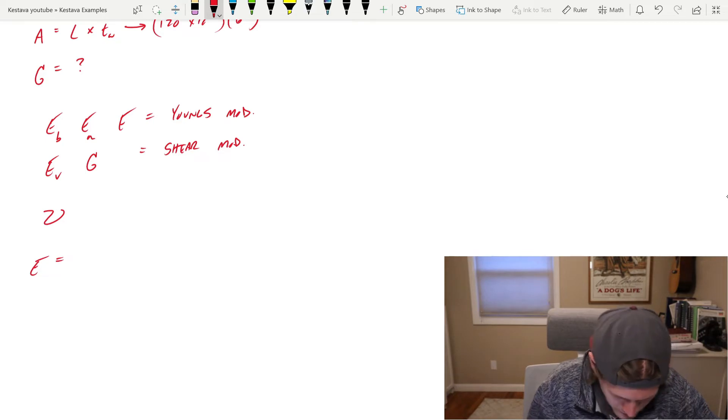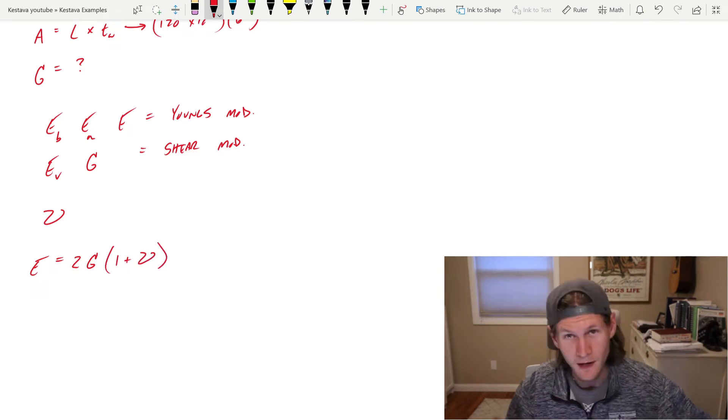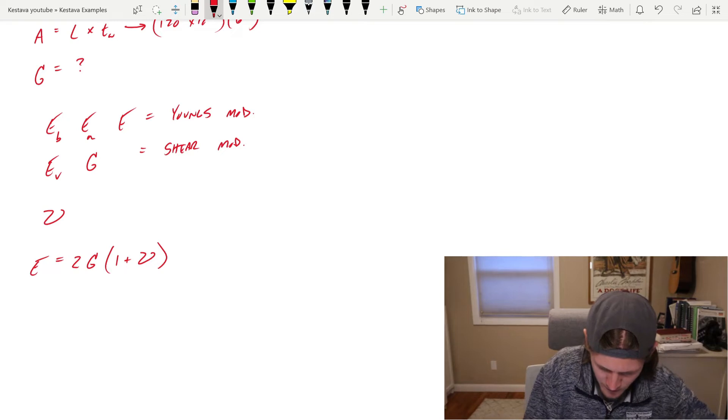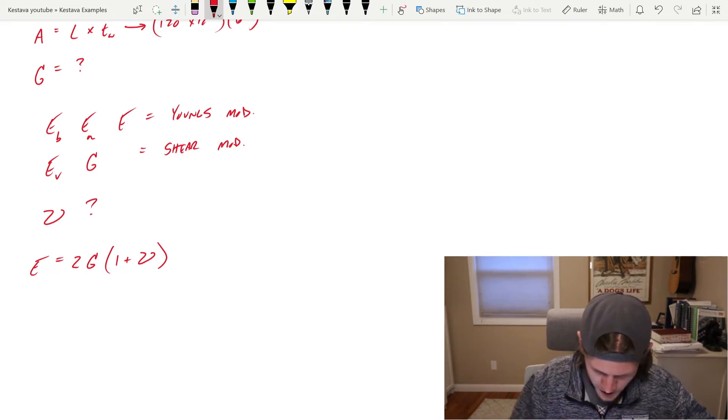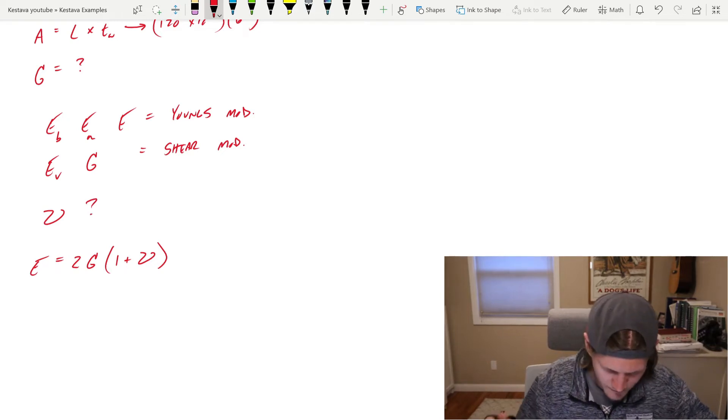And you can get this equation to convert by the following. E, your Young's modulus, is equal to 2G times parenthesis 1 plus your Poisson's ratio for concrete. Now we have this other variable, we have Poisson's ratio. Well, what is that for concrete?